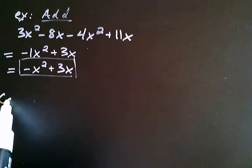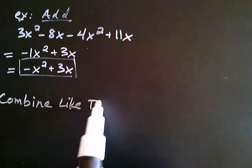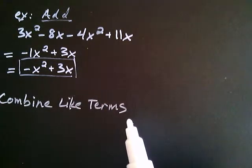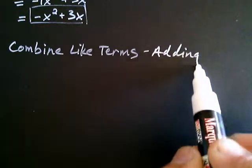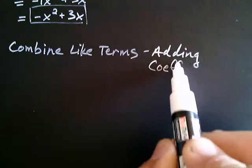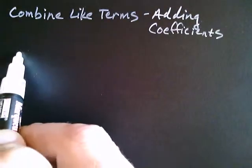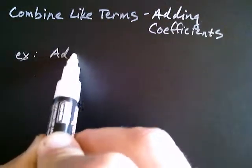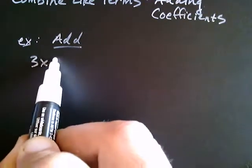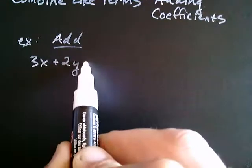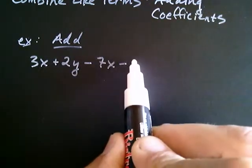The way you combine like terms is by adding their coefficients. Let's try another example: 3x plus 2y minus 7x minus 11y.